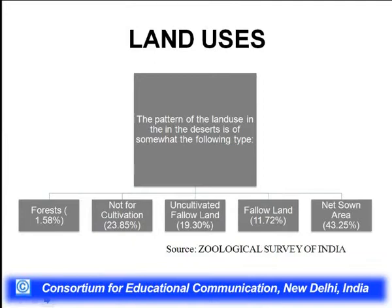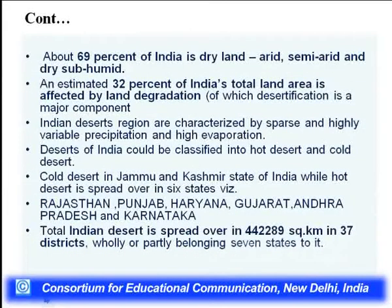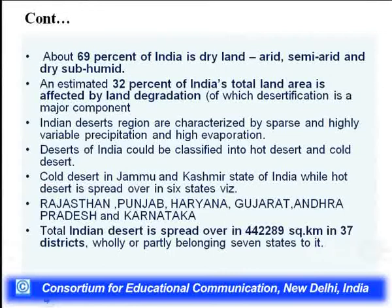Looking at land use patterns in the desert: forest land 11 percent, fallow land 11 percent, and net sown area 43 percent. About 32 percent of India's total land is affected by different types of land degradation, showing a very close relationship between land degradation and the desertification process. The region is also characterized by highly variable precipitation and high evapotranspiration.